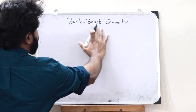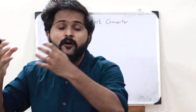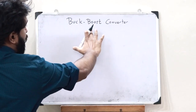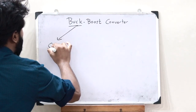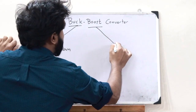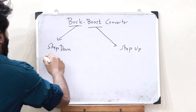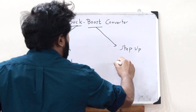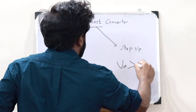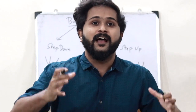A buck boost converter is a kind of DC-to-DC converter — it converts one form of DC voltage to another form of DC voltage. It can act both as a buck converter and as a boost converter. A buck converter acts as a step-down DC-to-DC voltage converter, whereas a boost converter acts as a step-up DC-to-DC voltage converter. In a buck converter the output voltage is less than the input voltage, whereas in a boost converter the output voltage is greater than the input voltage.